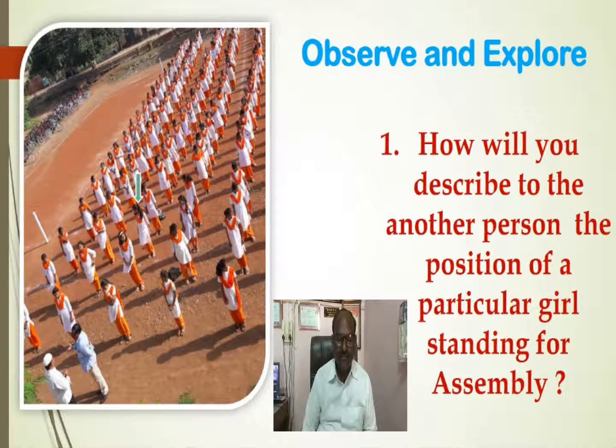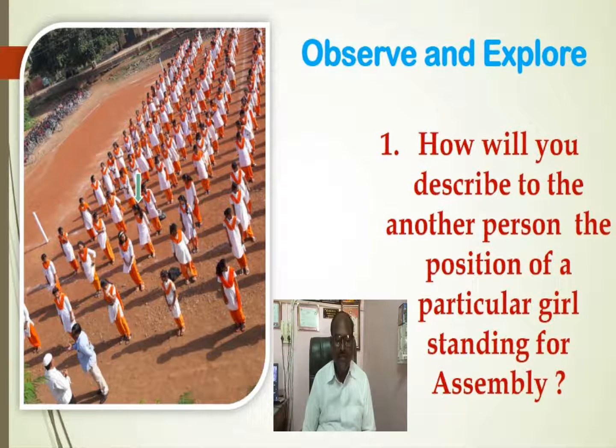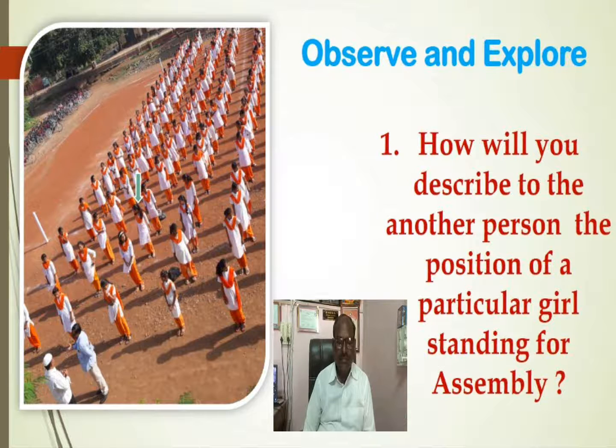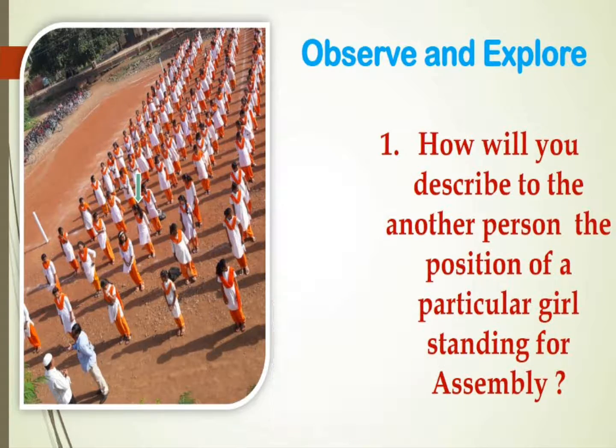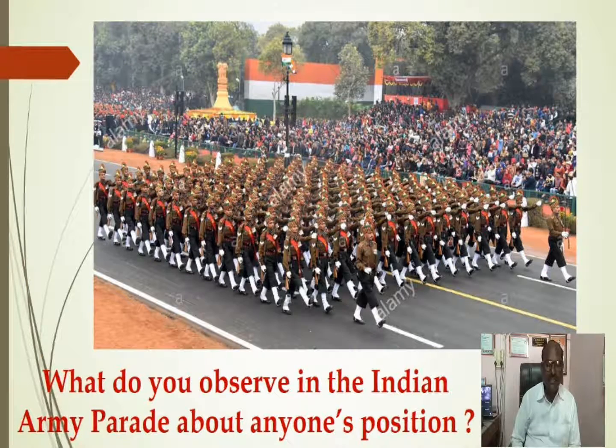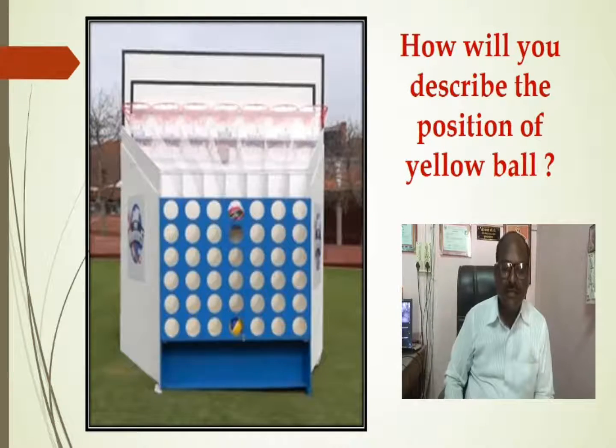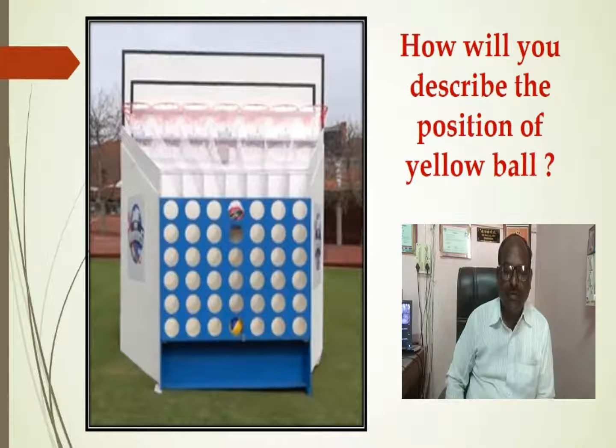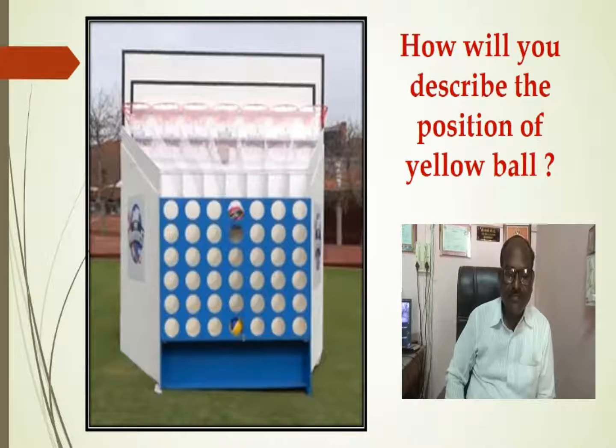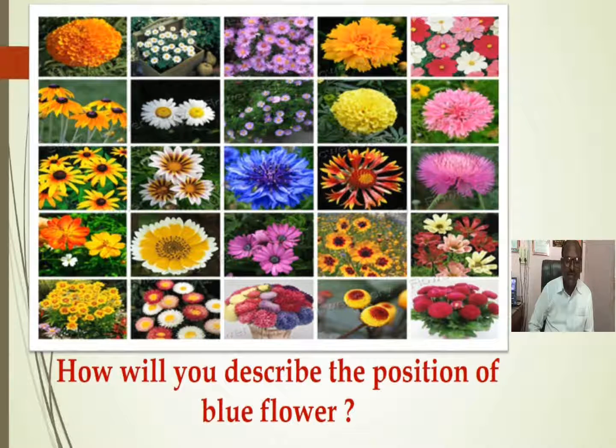Observe the picture and tell how will you describe to another person the position of a particular girl standing for assembly. See next picture. What do you observe in the Indian Army Parade about anyone's position? In this third picture, how will you describe the position of yellow ball? In this third picture, how will you describe the position of blue flower?